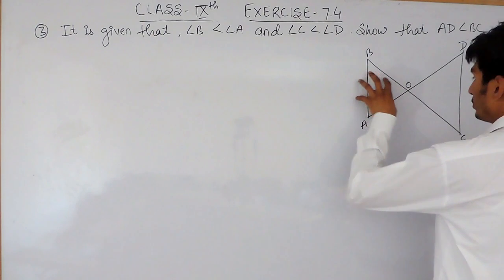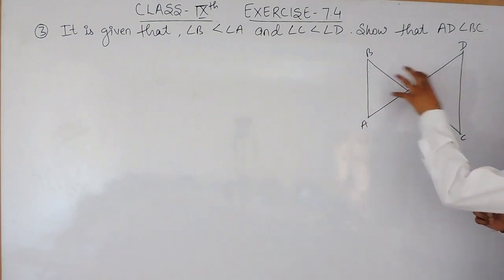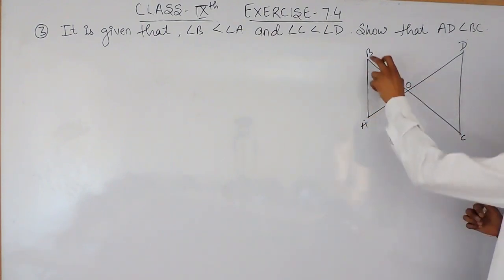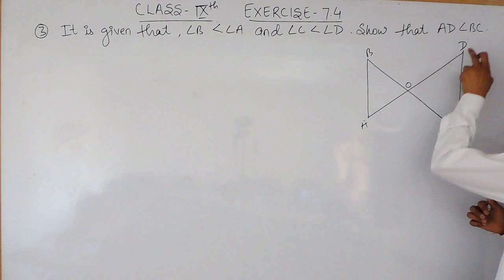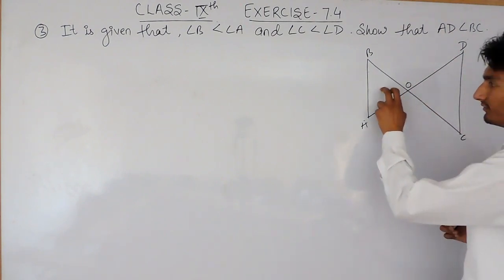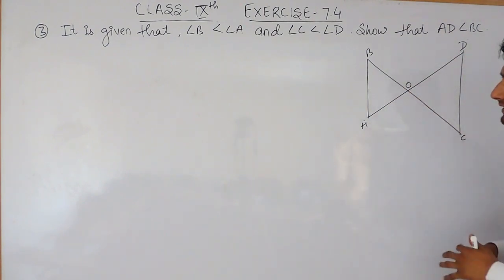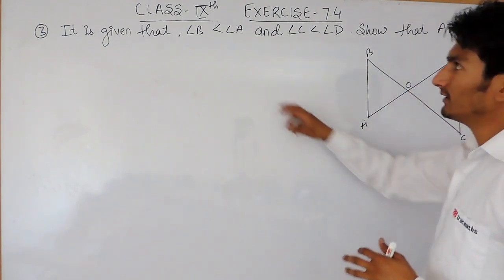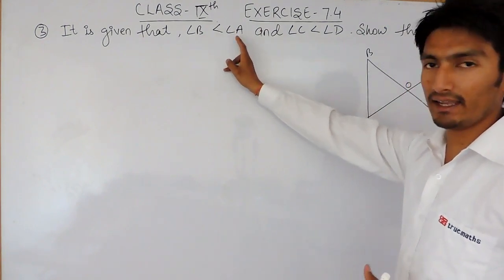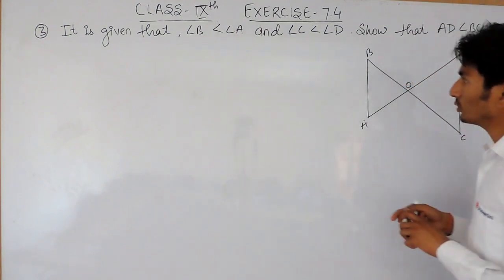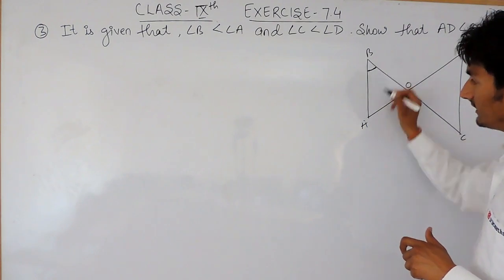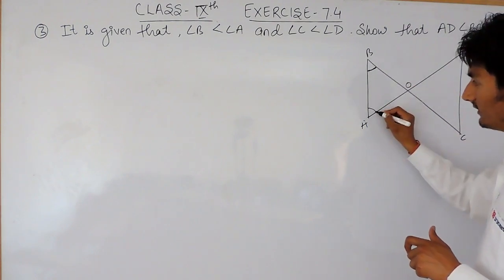There are two triangles given: the first is triangle ABO and the second is triangle ODC. In the first triangle, it is given that angle B is less than angle A, so this angle is less than this angle.